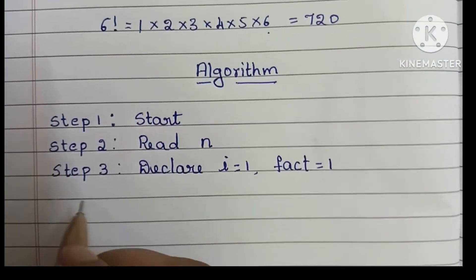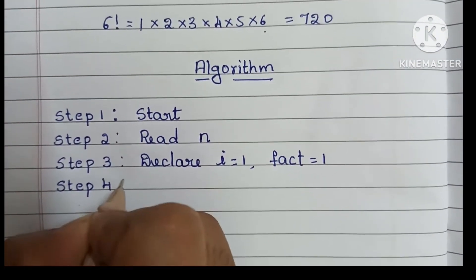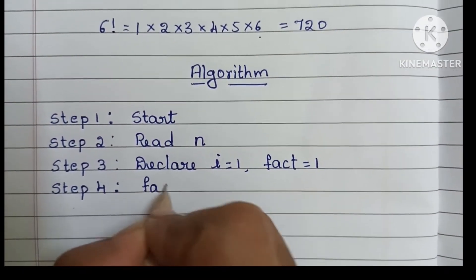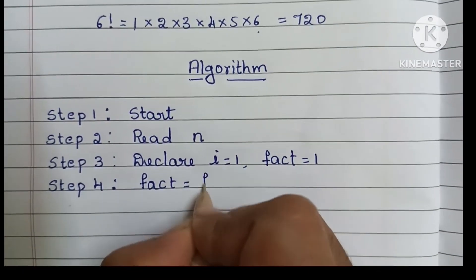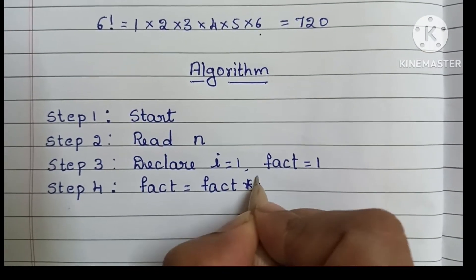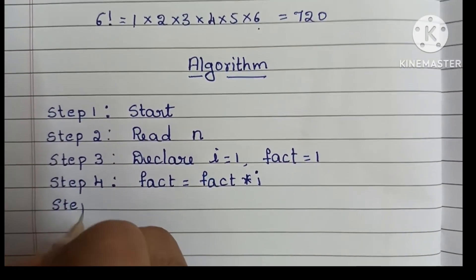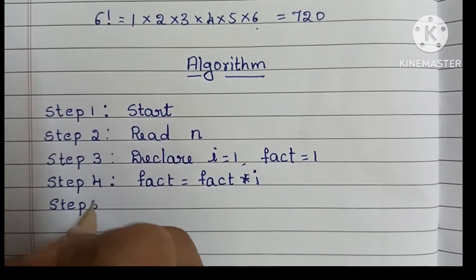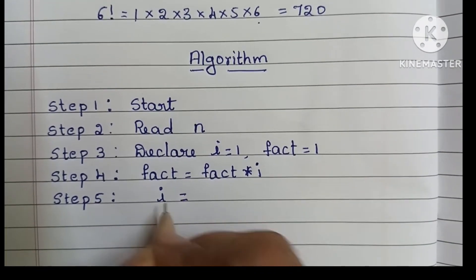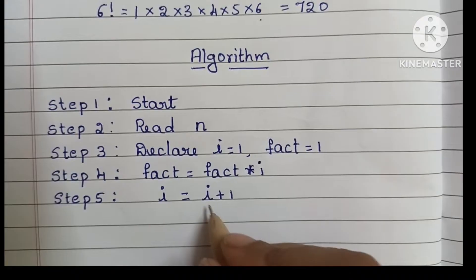Step 4: We have to calculate fact, where fact is equal to fact into i. Step 5: We have to increase the value of i — i is equal to i plus 1. Each time we have to increase the i value by 1.